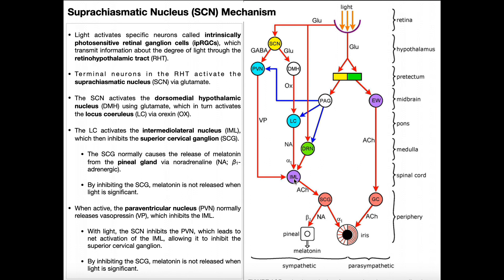The IML's function when there's light is to inhibit the SCG — the superior cervical ganglion. Under conditions where there's light, the IML is active and releases acetylcholine, which is generally inhibitory, to inhibit the superior cervical ganglion. The superior cervical ganglion at night, when it's dark, is normally active, and when it's active it stimulates the pineal gland to secrete melatonin into the blood via a beta-1 adrenergic mechanism.